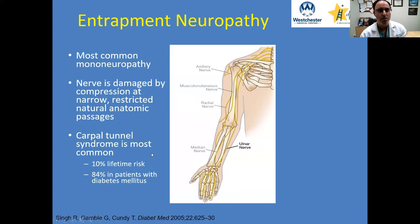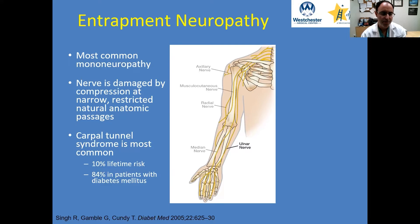So what is an entrapment neuropathy? This refers to a mononeuropathy, meaning a single nerve. In an entrapment, the nerve is damaged by compression that occurs at a narrow or restricted natural anatomic passage. These are different sites that people have found over time where a nerve is prone to being injured.